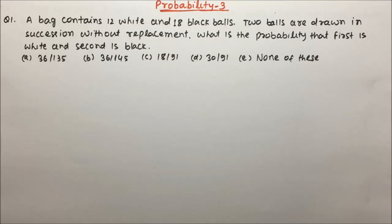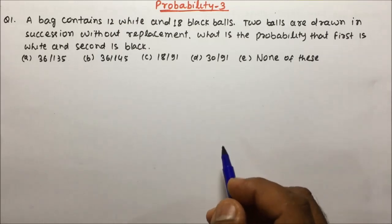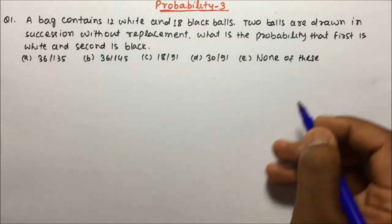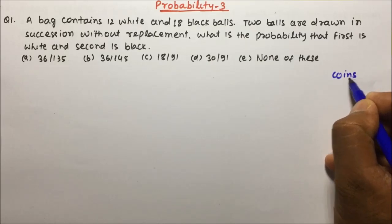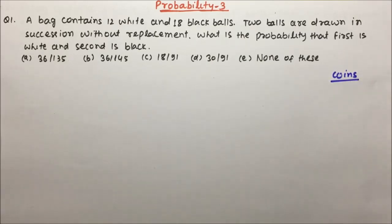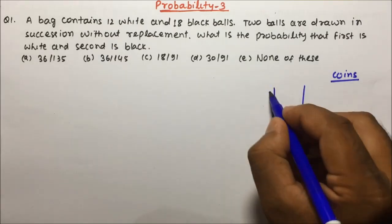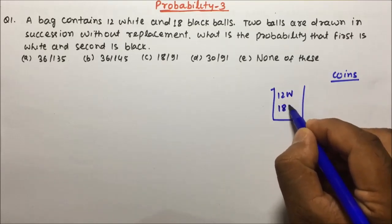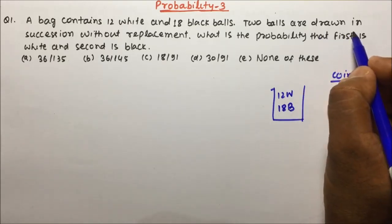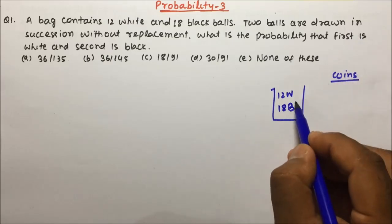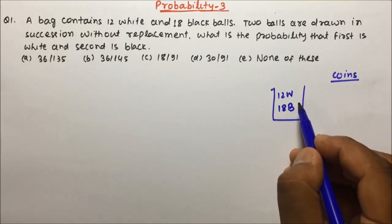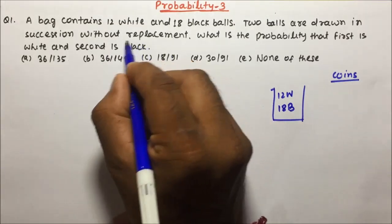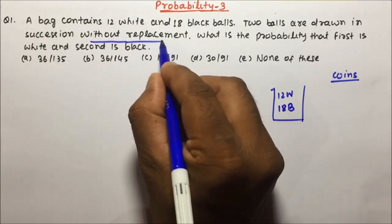A bag contains 12 white and 18 black balls. Two balls are drawn in succession without replacement. What is the probability that the first is white and the second is black? We have previously solved questions based on coins; now we are going to solve questions based on ball selection. This term 'without replacement' is a very important term in this question.